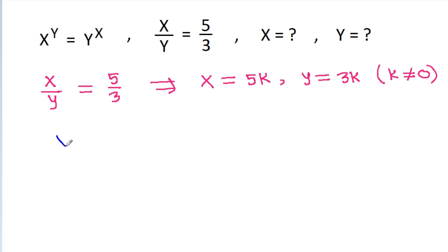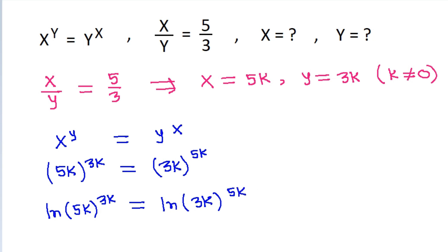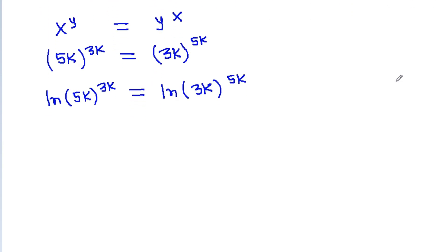We have x power y is equal to y power x, so (5k) power (3k) is equal to (3k) power (5k). Taking ln on both sides, ln of (5k) power (3k) equals ln of (3k) power (5k), which gives 3k·ln(5k) is equal to 5k·ln(3k).